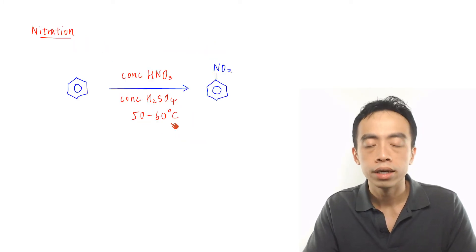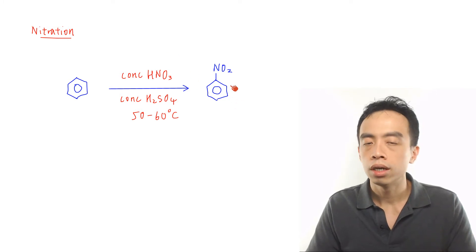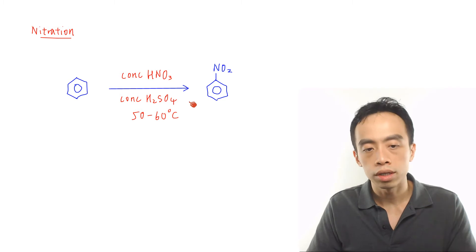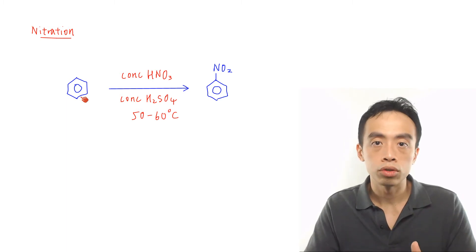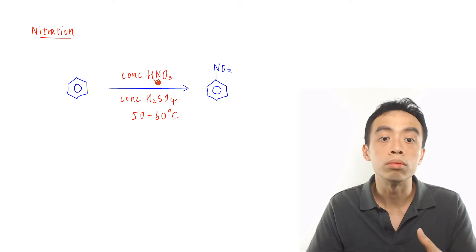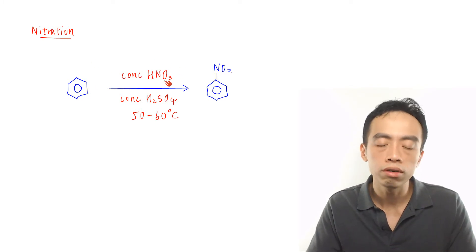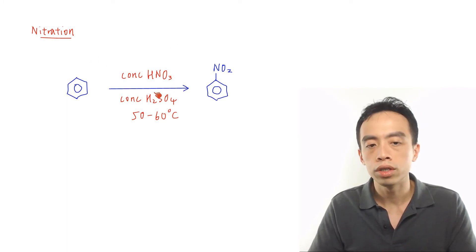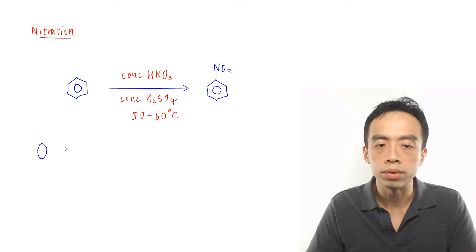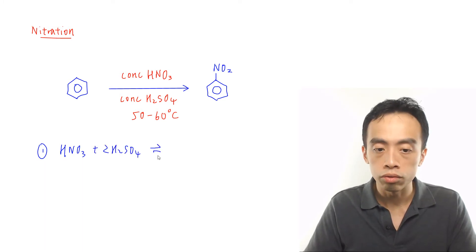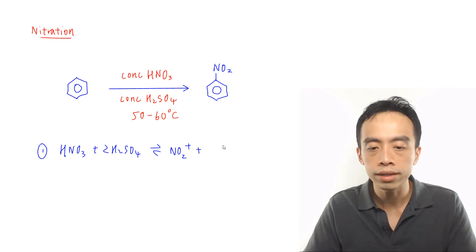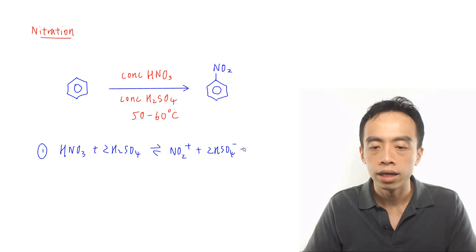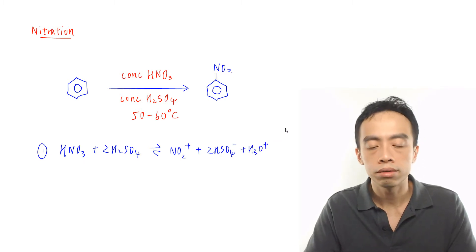Now there are two reactions we want to discuss. The first one is nitration of benzene to give nitrobenzene. This reaction is done using concentrated HNO3 in concentrated H2SO4 catalyst at 50 to 60 degrees Celsius. The mechanism is broken down into three steps. The first step is to generate the electrophile, because benzene is relatively stable, so we need to make HNO3 a little bit more attractive to benzene. This reaction is done between HNO3 and the catalyst H2SO4. HNO3 reacts with 2H2SO4 in a reversible reaction to generate the electrophile NO2+, plus 2HSO4- and H3O+.